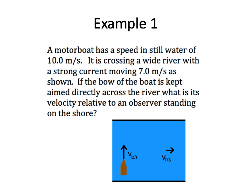A motorboat has a speed in still water of 10 meters per second. It's crossing a wide river with a strong current of 7 meters per second. The boat is going across the river and the river's current is perpendicular to that. If the bow of the boat is kept aimed directly across the river, what is the velocity relative to an observer standing on the shore? I can draw a coordinate system here with x and y — that's my ground coordinate system, which we'll call the shore.